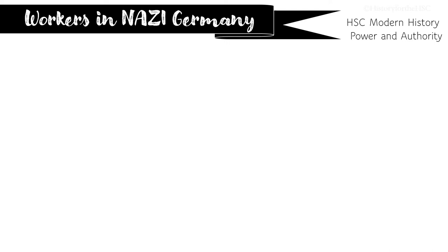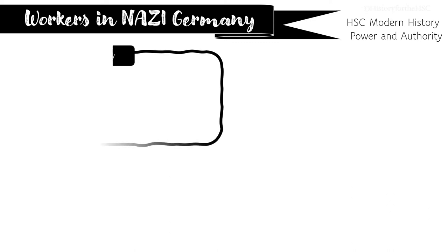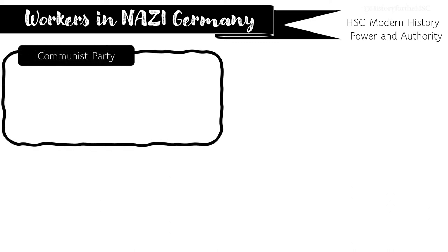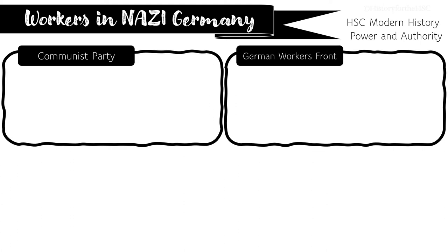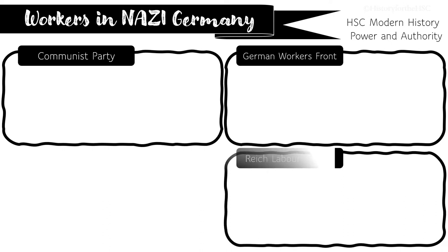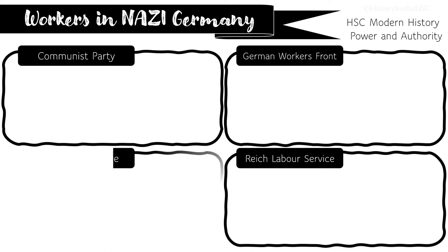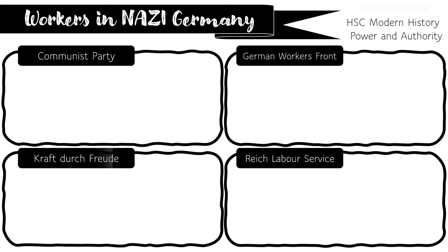There are lots of different ways that we could break down this specific dot point. Today, we're going to look at the following elements: firstly, the impact of the regime on the Communist Party and on communism within the Reich; secondly, the abolition of trade unions and the development of the German Workers Front as a replacement; thirdly, the creation of the Reich Labor Service or RAD; and finally, the Kraft der Freude program aimed at incentivizing the workforce to support the Reich's industrial and military demands.